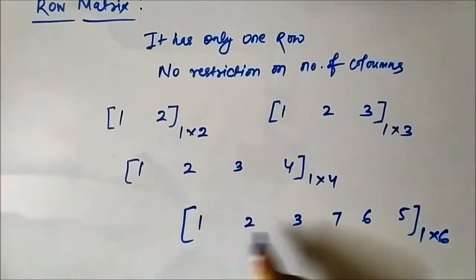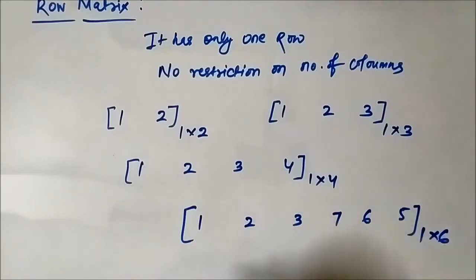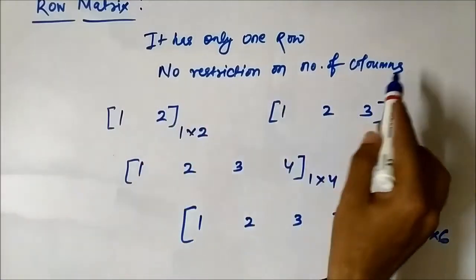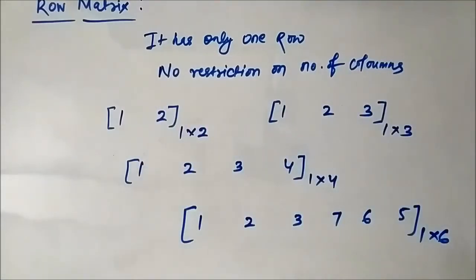So the number of rows that it can have is only 1. There is only restriction on the number of rows that it can have only 1 row, but there is no restriction on the number of columns. So this is what we call a row matrix.